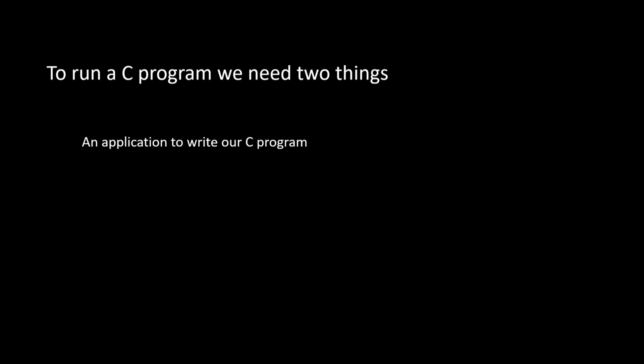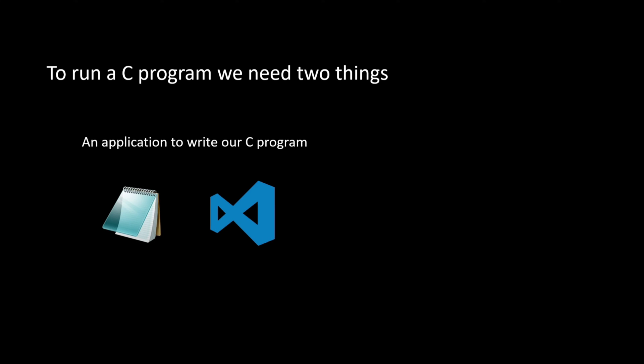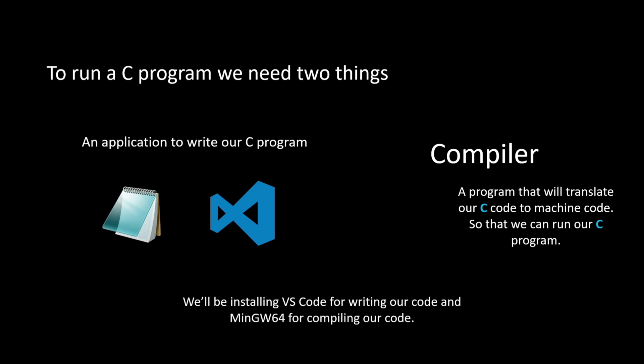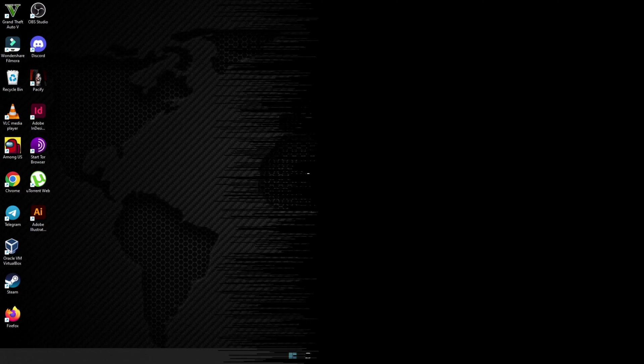To run a C program we need two things: first, an application to write our C program — it can be as simple as Notepad or a dedicated code editor like VS Code — and then a compiler, which is a program that translates our C code to machine code so we can run it. In this video, we will be installing VS Code for writing our code and MinGW64 for compiling our code. Let's begin.